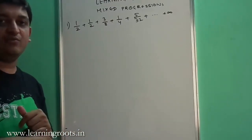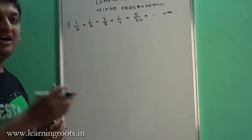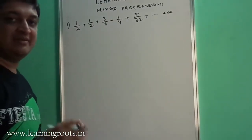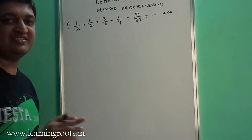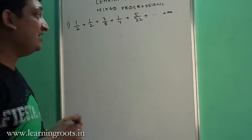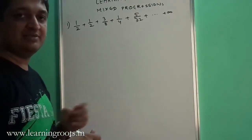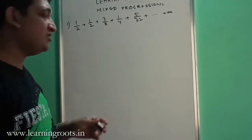So till now we have seen what an arithmetic progression looks like, how to find the nth term and the sum of the first n terms, what a geometric progression looks like and how to find the nth term and the sum of first n terms, and so on.